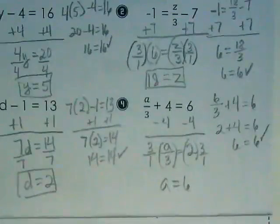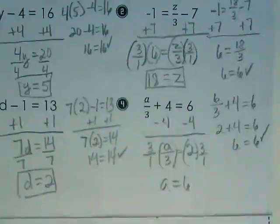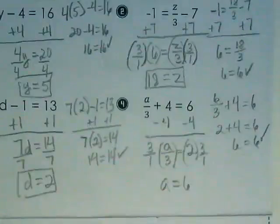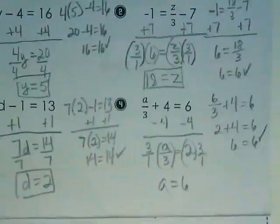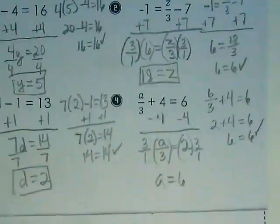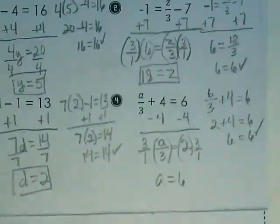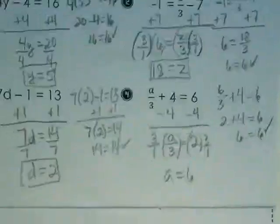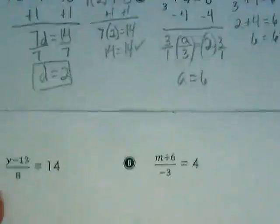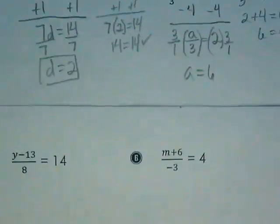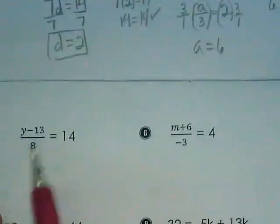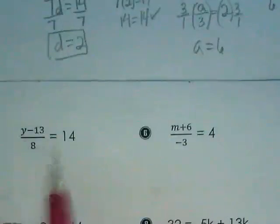We are going to do two more problems together, and then I'm going to let you do the last two on your own. Would you like to do 5 or 6 together? They're similar. 5? Okay. Let's do 5 first. It's a little bit different than we've been seeing because we have something going on as a whole fraction, not as a separate number.